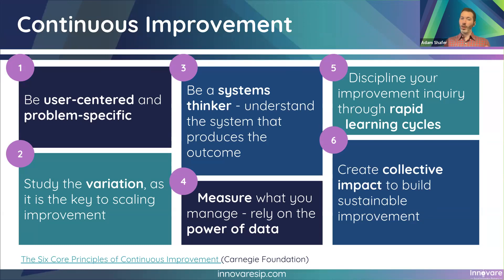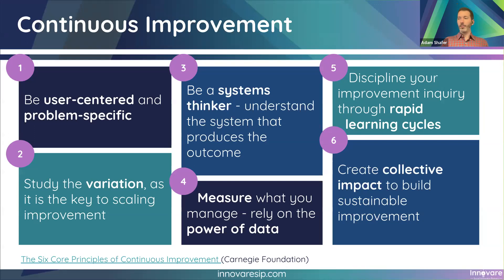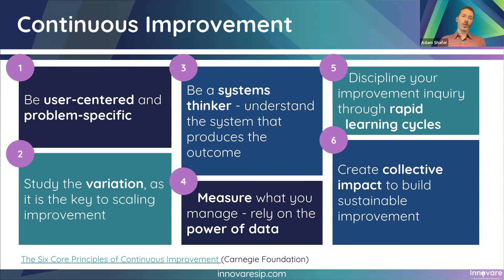The second principle is to study that variation — what changed in the process during the cycle. Third: be a system thinker, understand the system you're working in so you can change it. Fourth: measure what you manage — rely on the power of data to build your improvement style and goal cycles. Fifth — which we'll focus on today — discipline your improvement inquiry through rapid learning cycles. Sixth: create collective impact to build sustainable improvement.